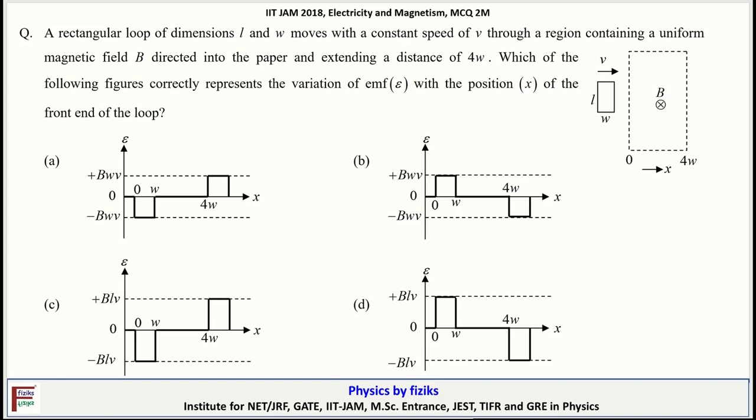In this question, it is given that a rectangular loop of dimension L and W moves with a constant speed V through a region containing uniform magnetic field B, pointed inward and extending a distance 4W. Now we have to identify the correct graph which represents the variation of EMF E with position x of the front end of the loop.